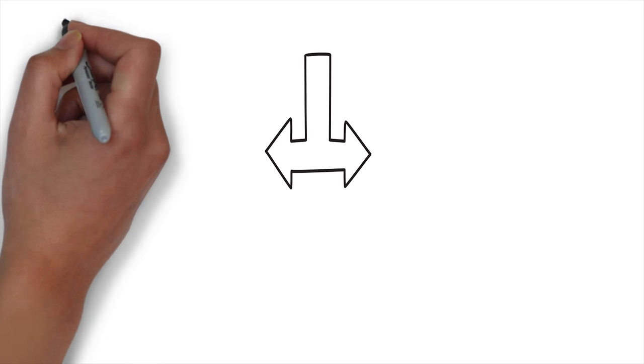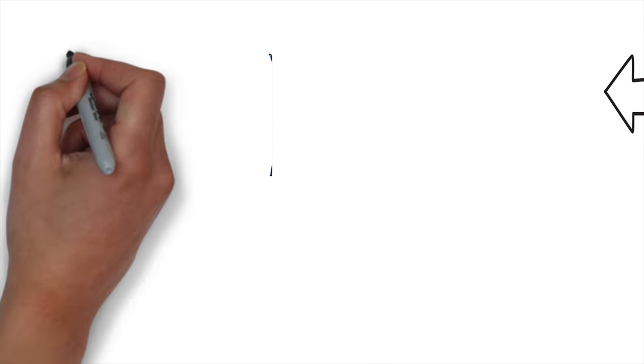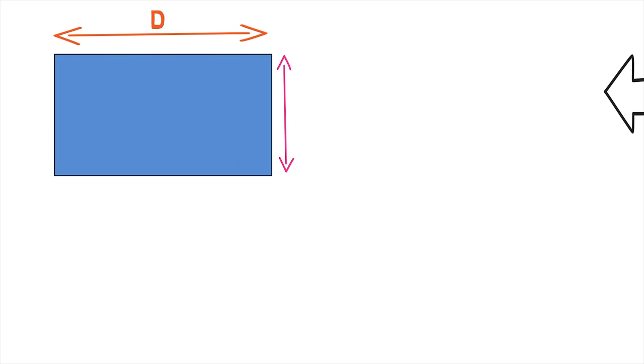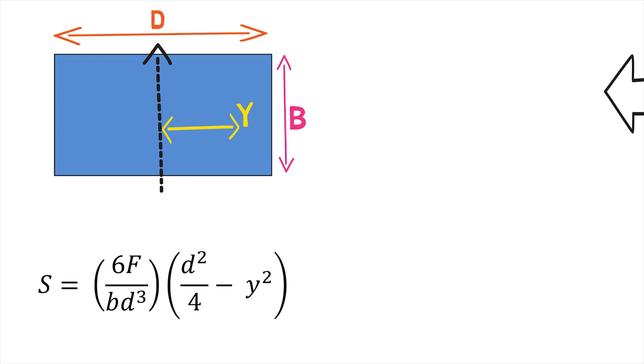Now, consider two basic cross-sections for studying distribution of shear stress. The first is a rectangular cross-section of length d and breadth b. For any distance y from the neutral axis, the shear stress is given by the following equation.